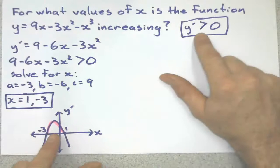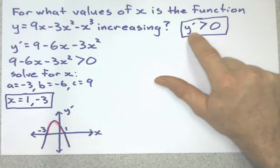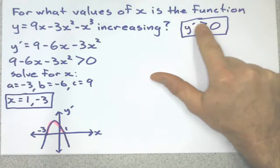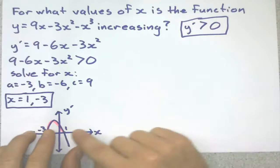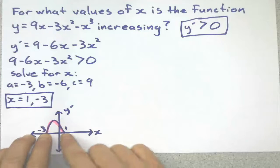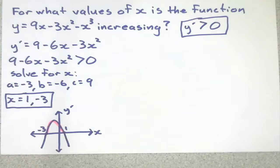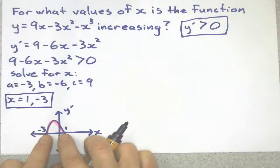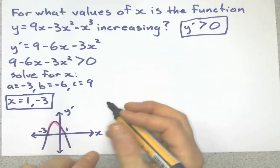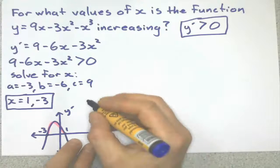So why have I highlighted this bit? Because in my notes here, I'm saying it's increasing when the gradient is greater than 0. It's increasing when the gradient is positive. Well, on my graph, here is where the gradient is positive. Everything between negative 3 and 1 is going to be the positive gradient.